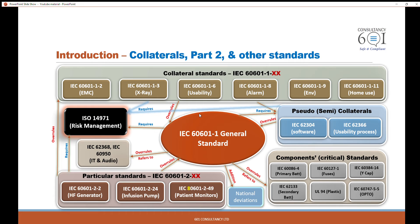Those other standards include collateral standards, and they take the form of IEC 60601-1-XX. They have additional requirements on top of the general standard, but they are based on specific aspects such as home use, environmentally conscious design, alarm systems, and so on. So those are the collateral standards.